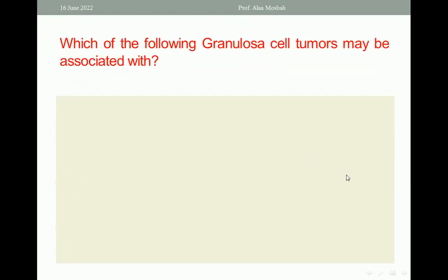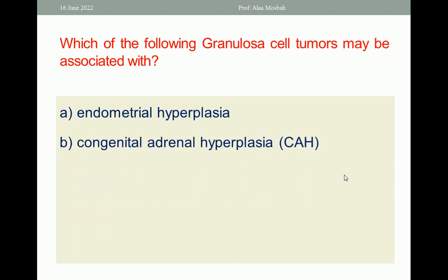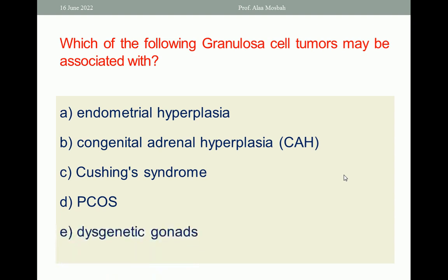Which of the following may granulosa cell tumor be associated with? A. Endometrial hyperplasia; B. Congenital adrenal hyperplasia; C. Cushing syndrome; D. PCOS; E. Dysgenetic gonads. The one best response here is A — endometrial hyperplasia.